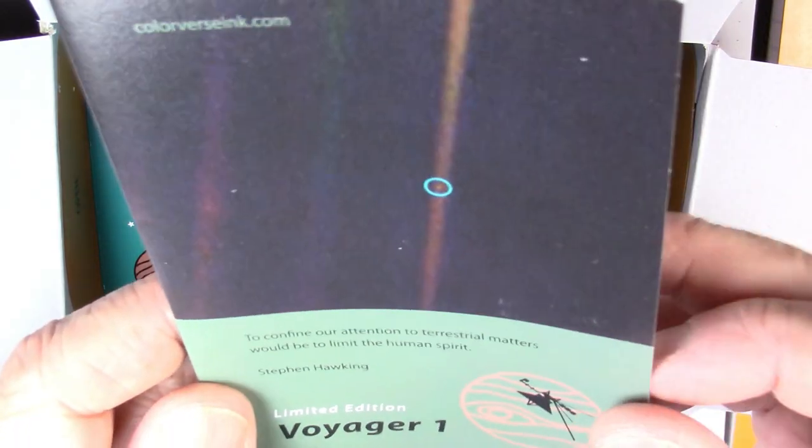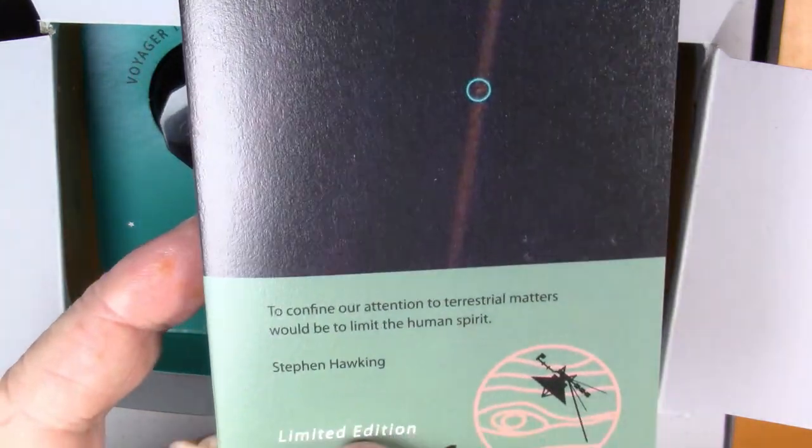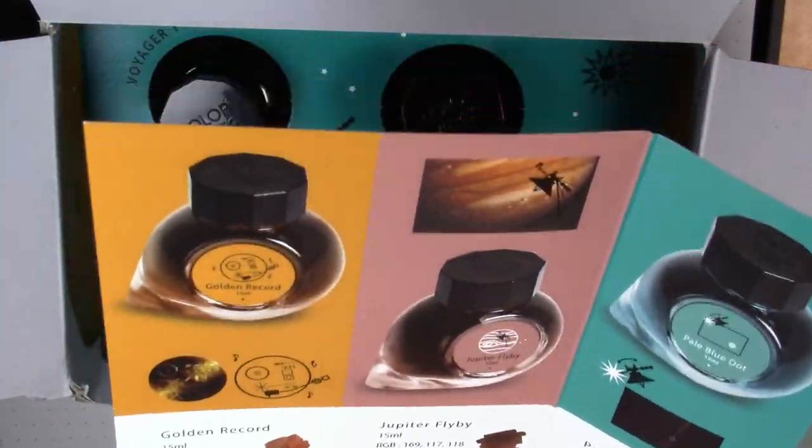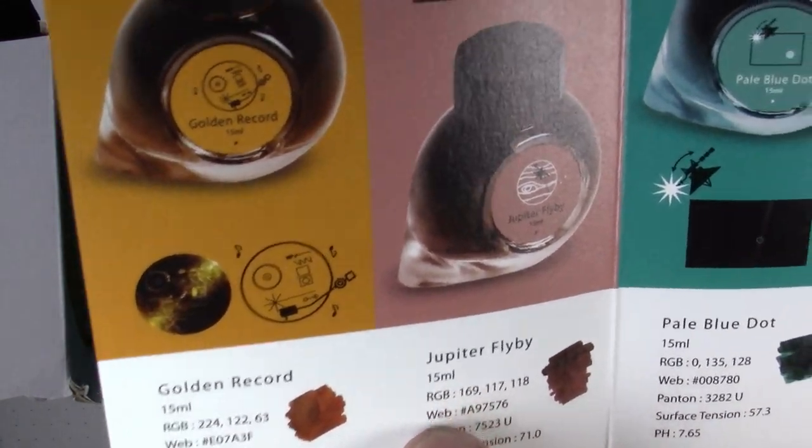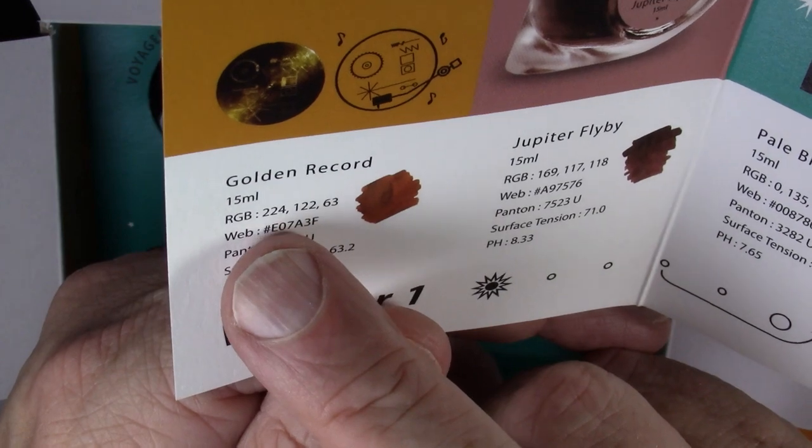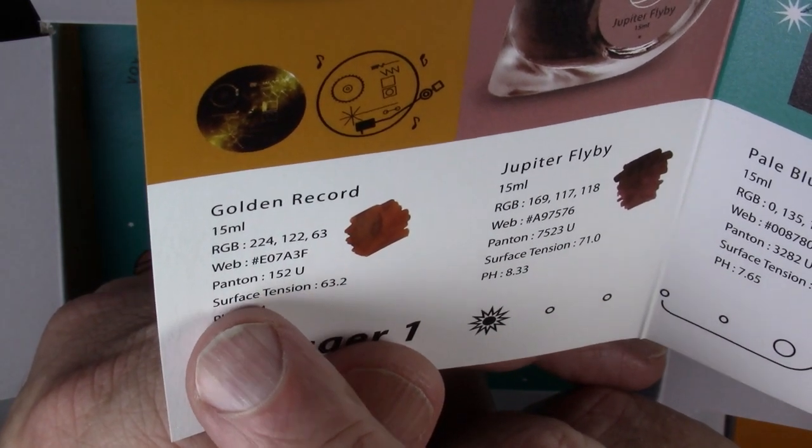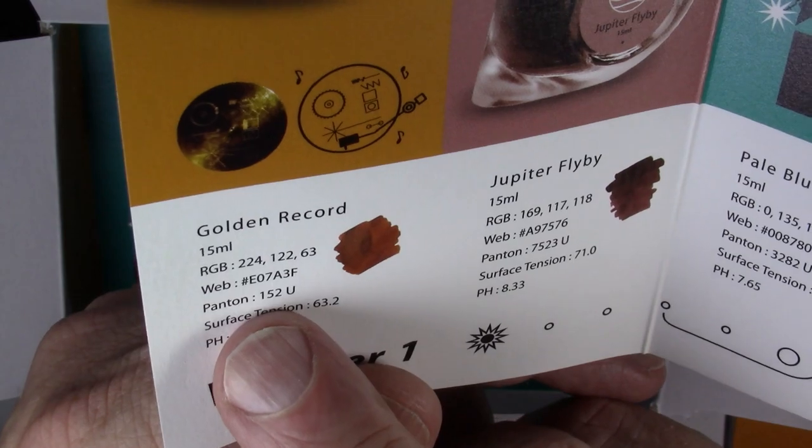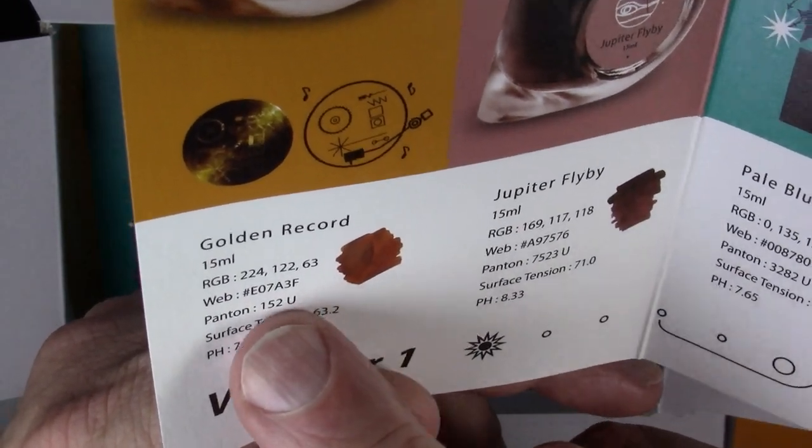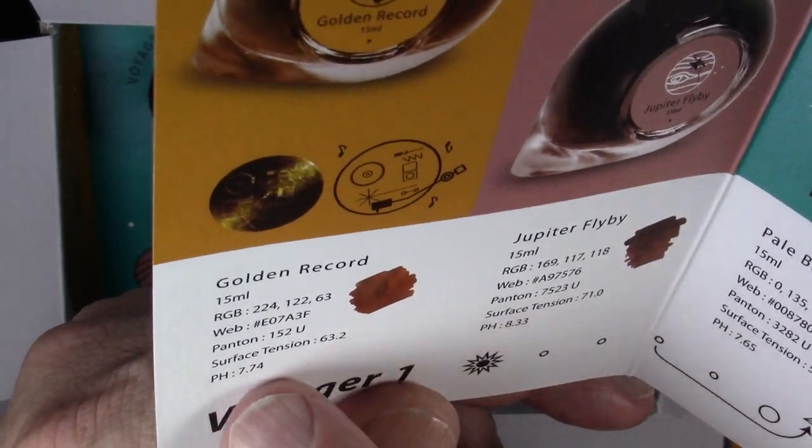You then get this little booklet. It has a quote from Stephen Hawking here. It talks about how this is a limited edition, and then it goes into some detail on each of the inks. A couple of things which I find really interesting, and you don't see this very often with other inks. As a matter of fact, I don't think I've seen this anywhere. So it gives you, for the particular ink we're looking at today, the RGB values for the color of the ink. Something with, I'm assuming this is Pantone misspelled. This is the Pantone number, and the surface tension, and the pH of the ink.